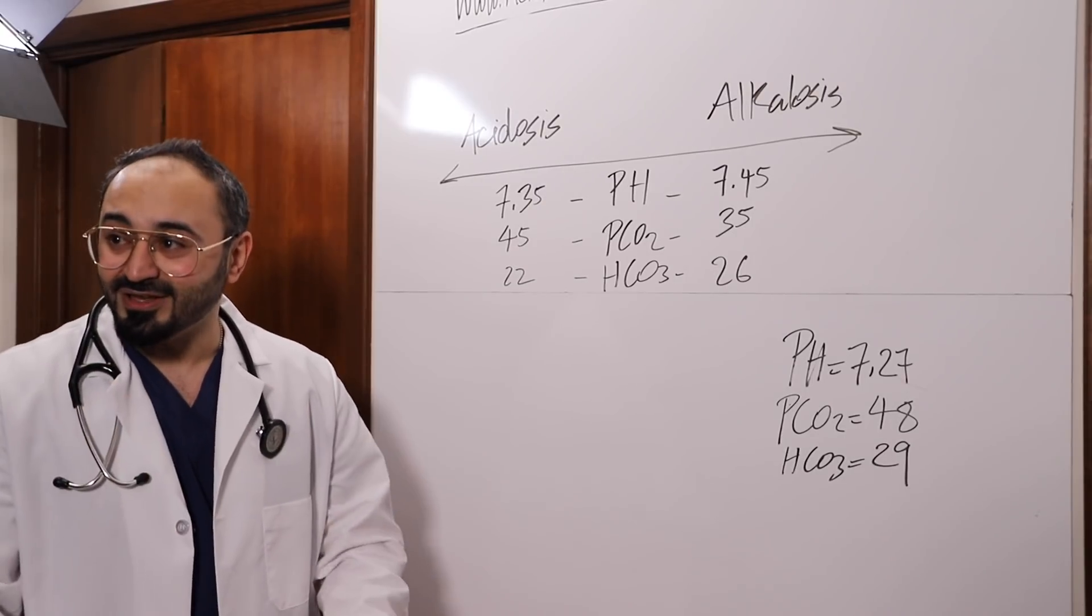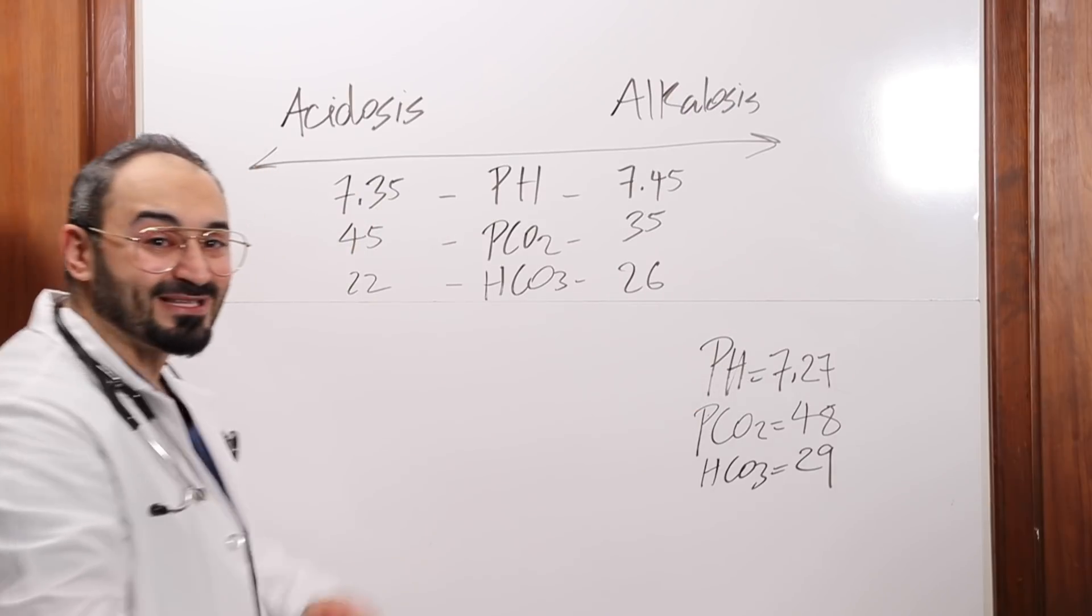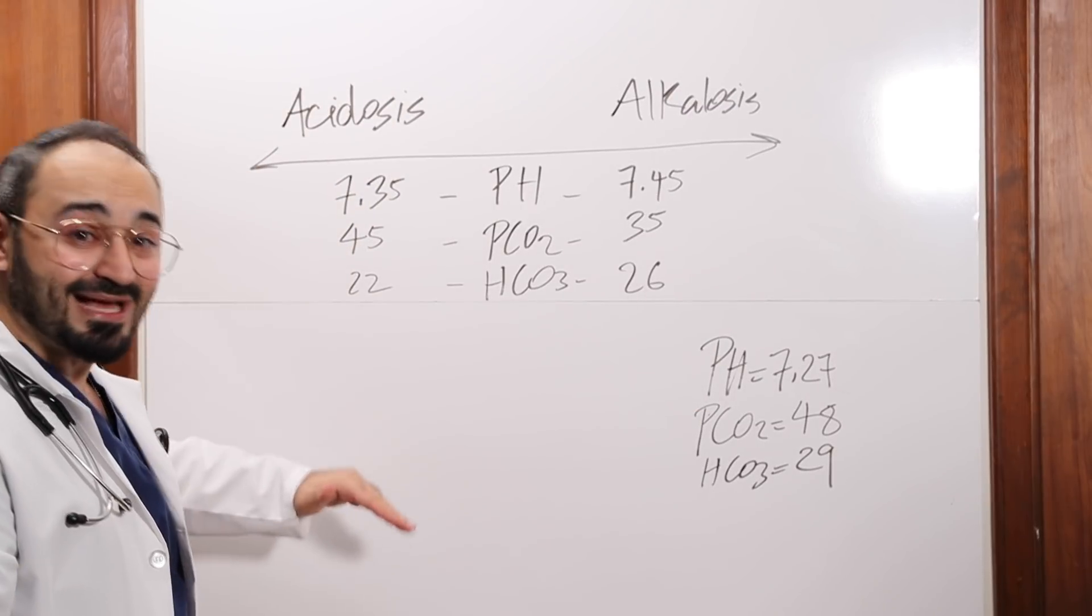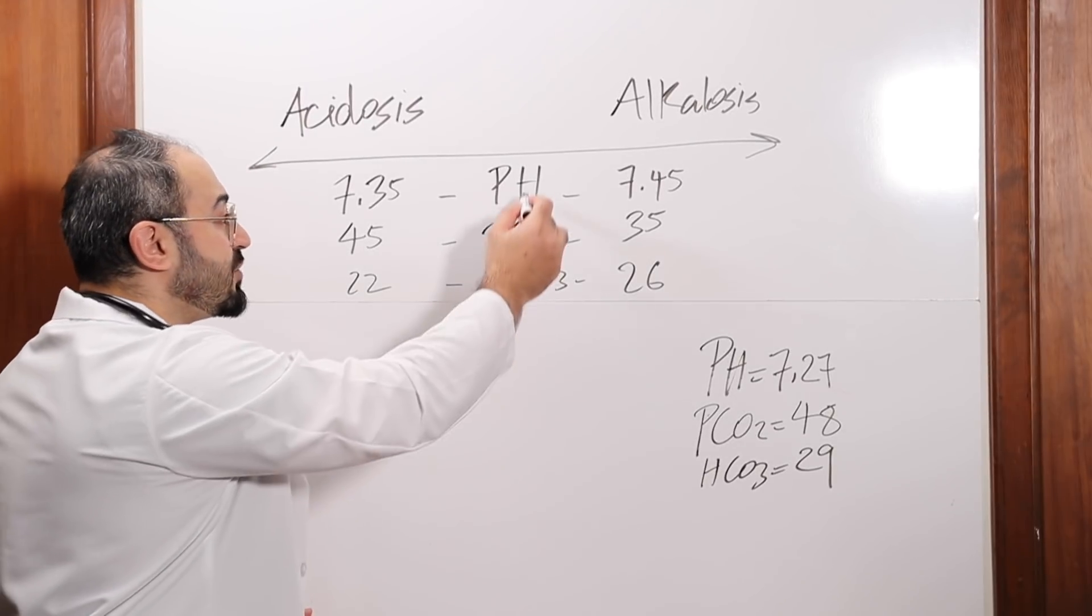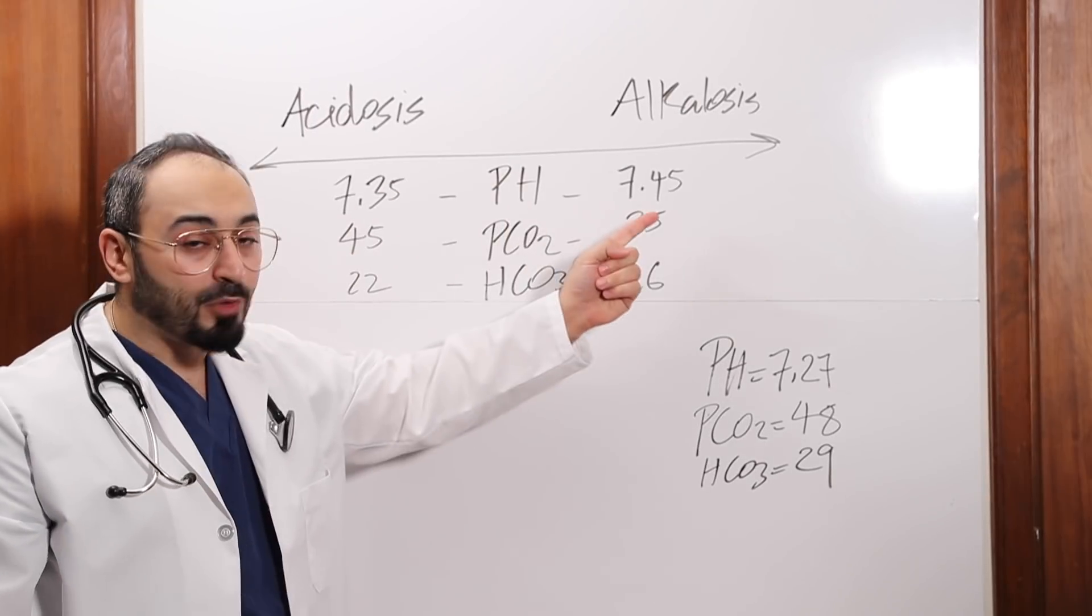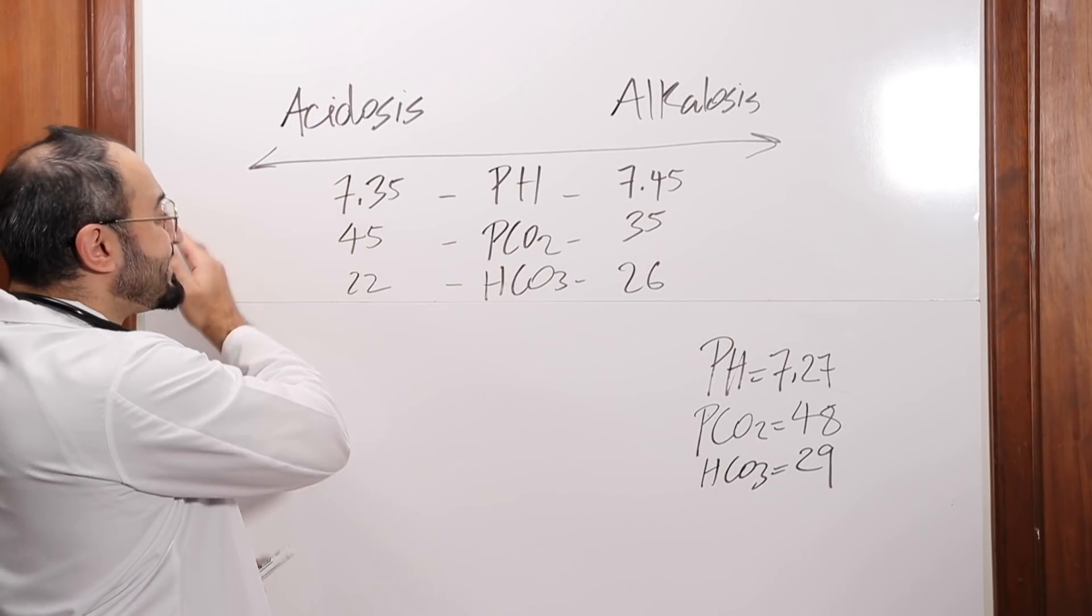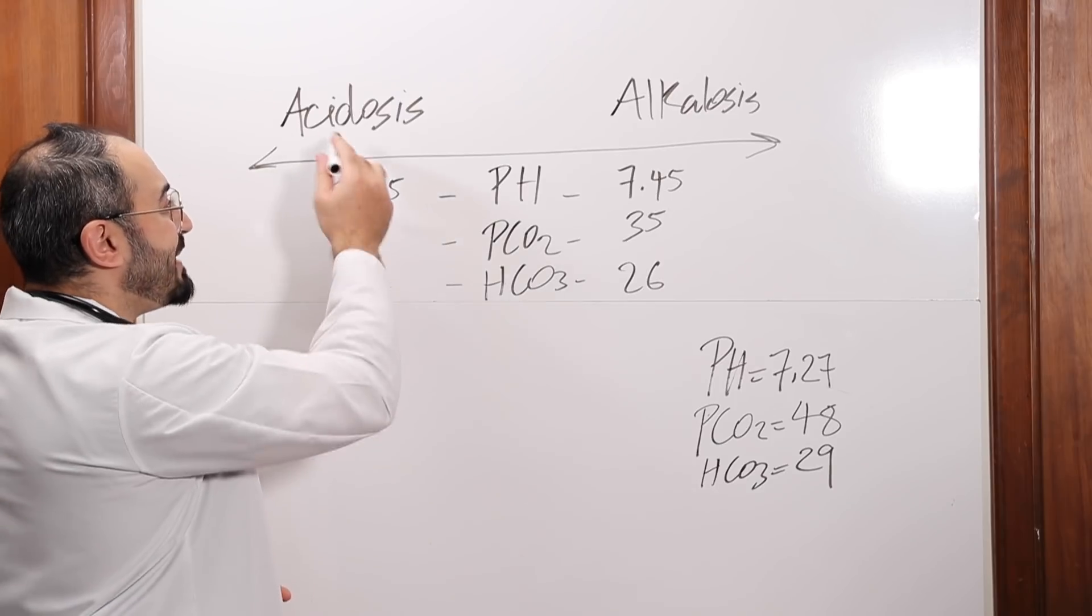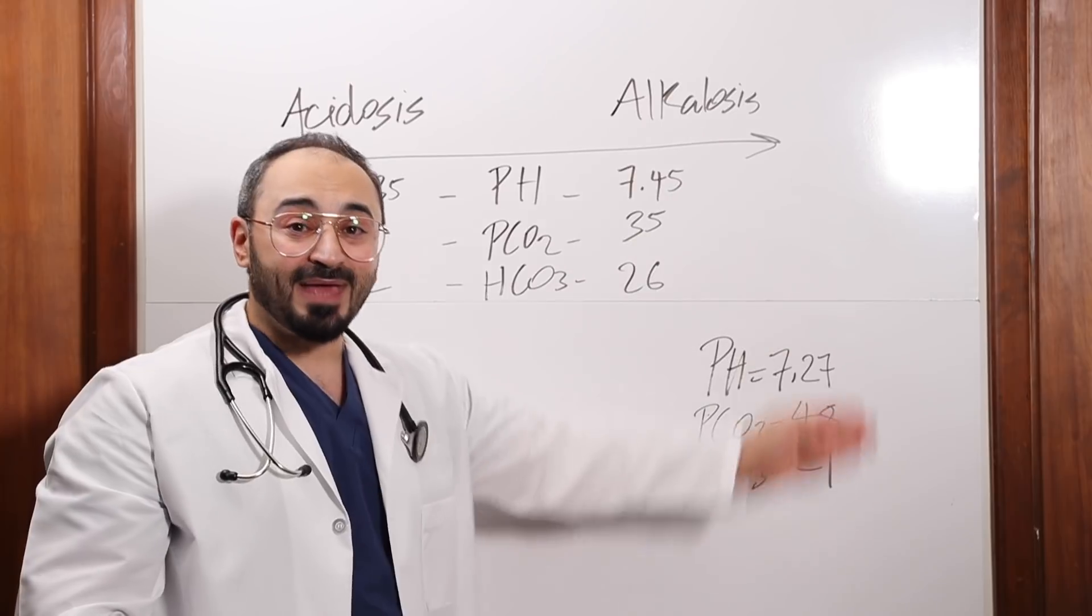First we're gonna start with some normal values. I'm gonna explain what acidosis is, what alkalosis is. Basically everything on this side is acidosis. Everything on that side is alkalosis. We're gonna start with pH. The normal value is between 7.35 and 7.45. So if your number, your pH is less than 7.35, it's gonna be acidosis. More than 7.45, it's gonna be alkalosis.